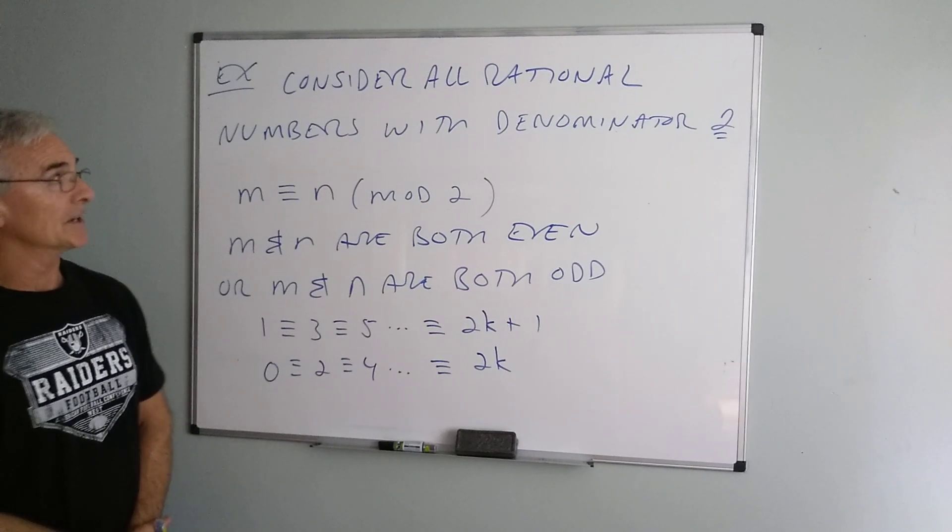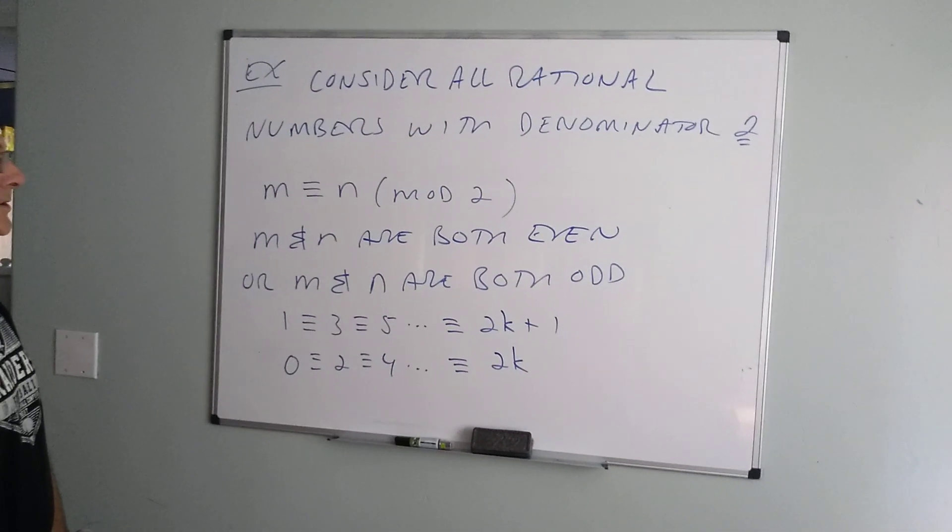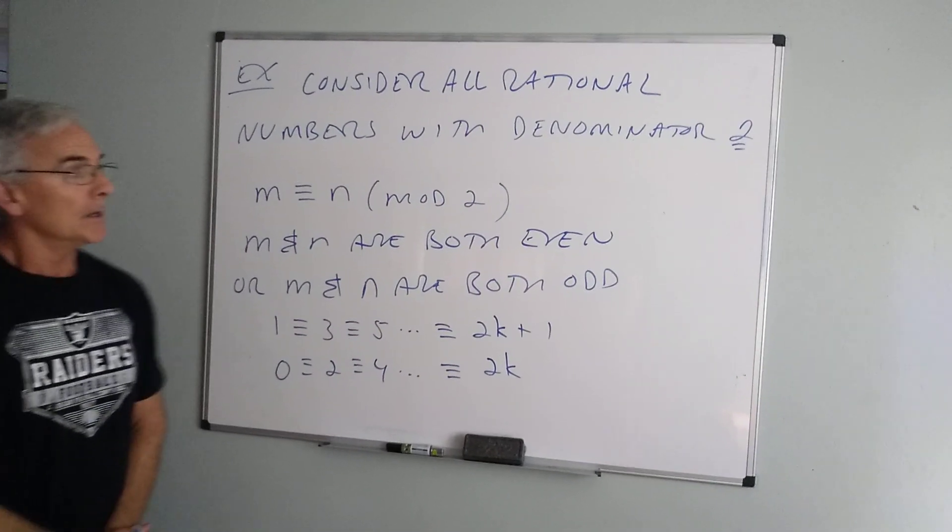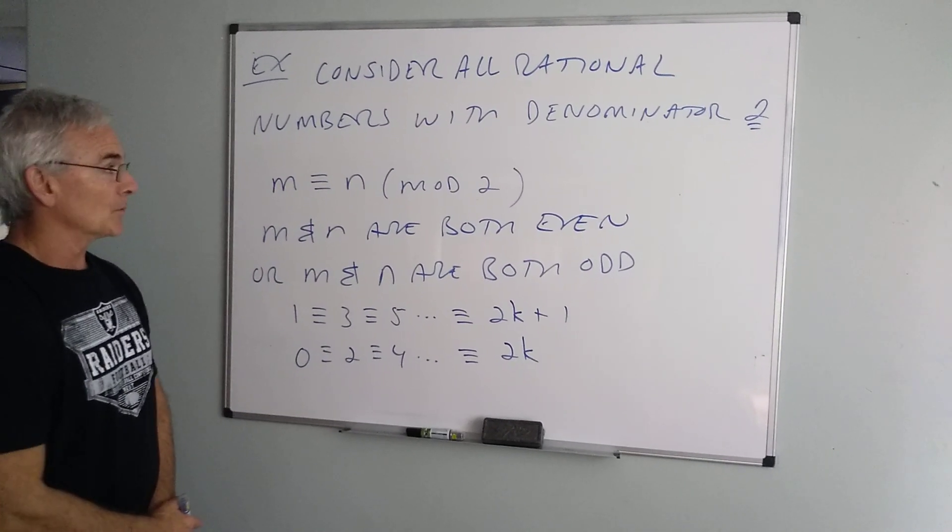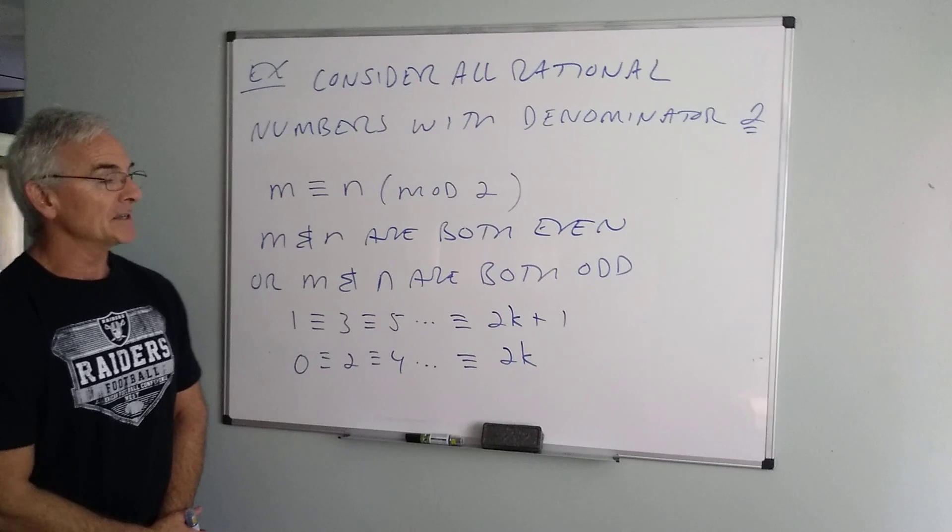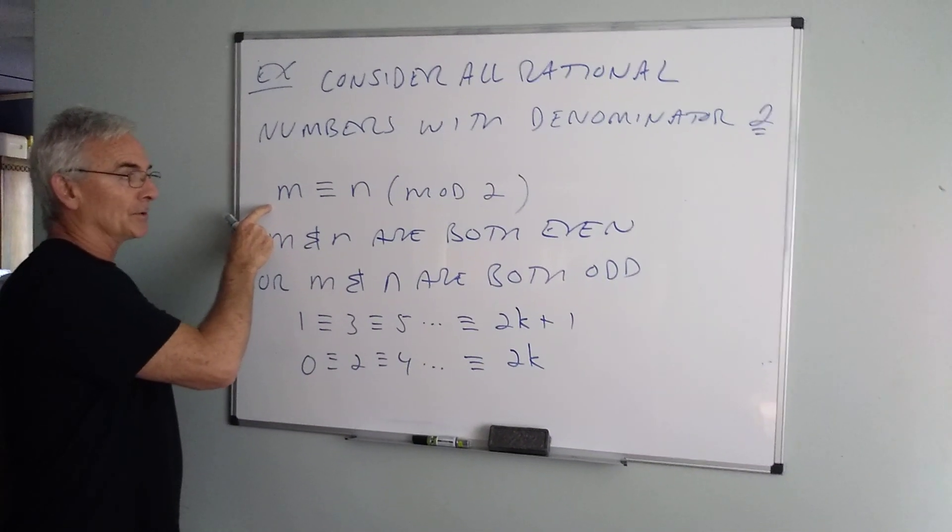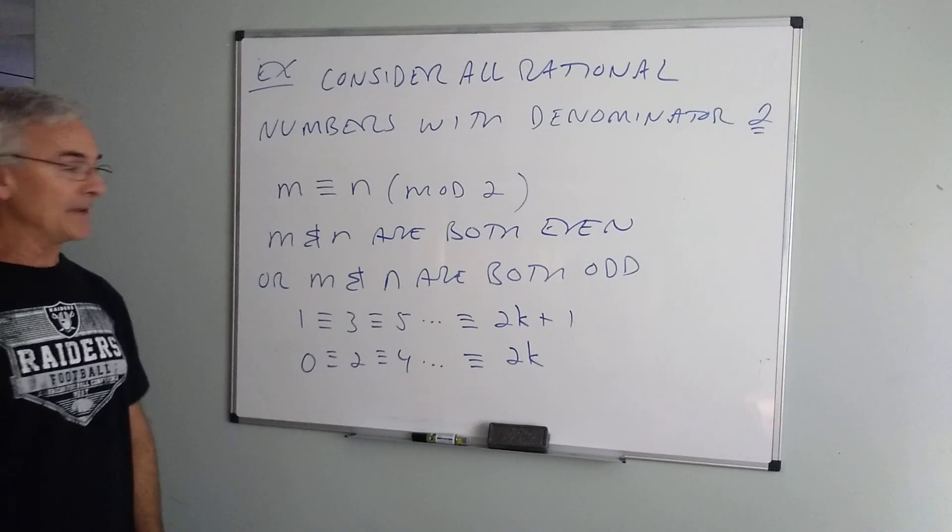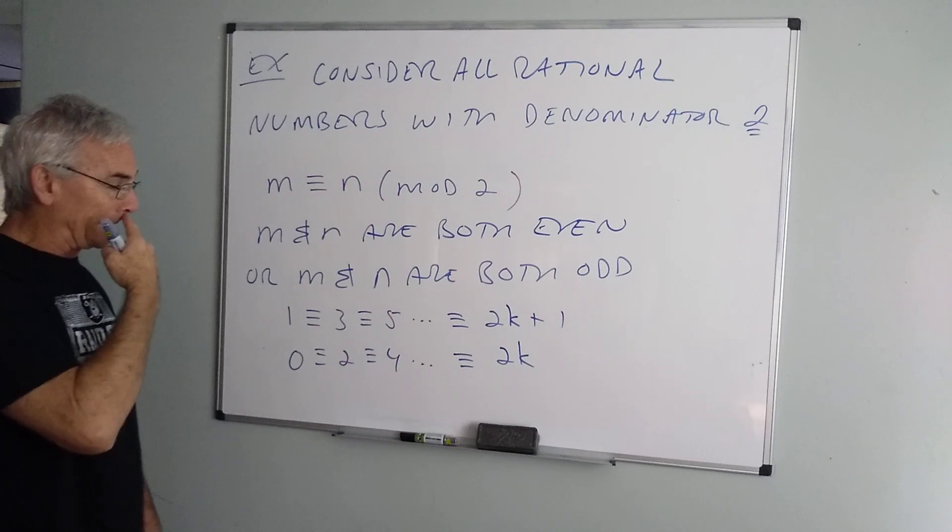Alright let's look at an example here. I want to consider all rational numbers with the denominator of 2. Well if my numerator is even versus my numerator is odd will determine if I have a remainder or not. So we're going to end up with exactly two equivalence classes. So we'd say two numbers are equivalent mod 2 if they have the same remainder, which means that basically m and n are either both even or they're both odd.